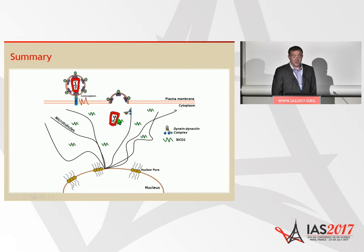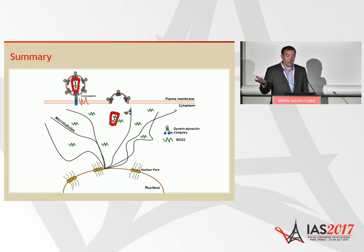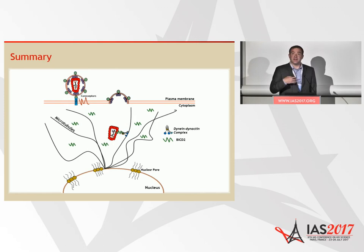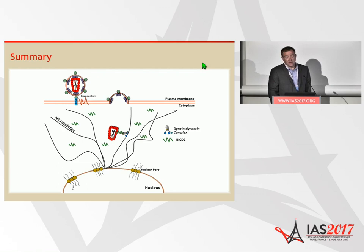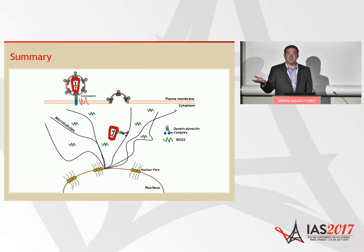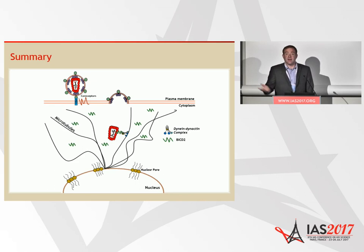To briefly summarize in cartoon form: the viral capsid in the cytoplasm engages the BICD2 dynein adapter through its cargo binding coiled-coil 3 domain. Disrupting that interaction disrupts dynein-dependent directed trafficking, which we can measure as directed motion. This prevents nuclear import of the viral genome. More excitingly, disrupting this interaction increases sensing of these viruses in the host cell, which could be leveraged for interferon-mediated inhibition of viral infection.